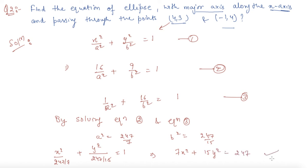So this is the equation we had to find for the ellipse. These types of questions might come in exams, where you need to find the equation of the ellipse when given the points through which it passes. We have discussed all types of questions — finding the length of major axis, minor axis, foci, vertices, eccentricity, and the equation of the ellipse. I think now you can easily solve the questions. If you are still facing any issue or doubt, please comment in the comment section. I will be more than happy to help you. Thank you.